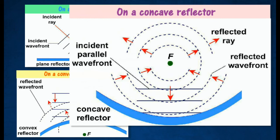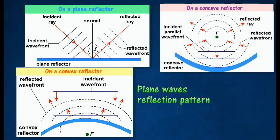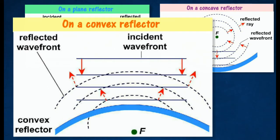Plane wave incident on a concave reflector: the waves are reflected as circular waves which converge at point F. Beyond F the reflected waves diverge outwards. Plane wave incident on a convex reflector: the waves are reflected as circular waves which appear to diverge from the principal focus F.